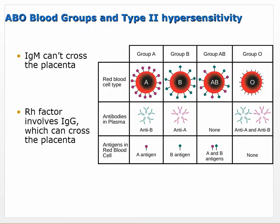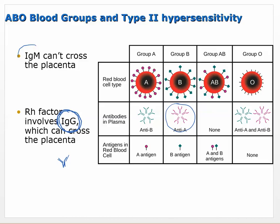IgM antibodies are unable to cross the placenta - so if mom is type A and the fetus is type B, it doesn't matter, because even if mom makes antibodies against the baby's blood type, those large IgM antibodies won't cross over. Baby and mom don't share blood - the baby has its own circulatory system, and smaller products like oxygen and sugar move across. But because Rh factor is attacked by smaller IgG antibodies, mom can attack the Rh-positive fetus.